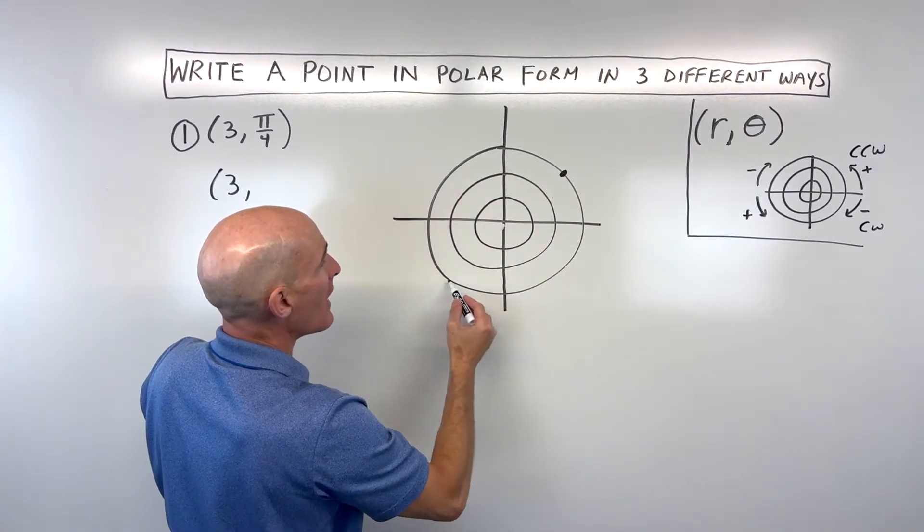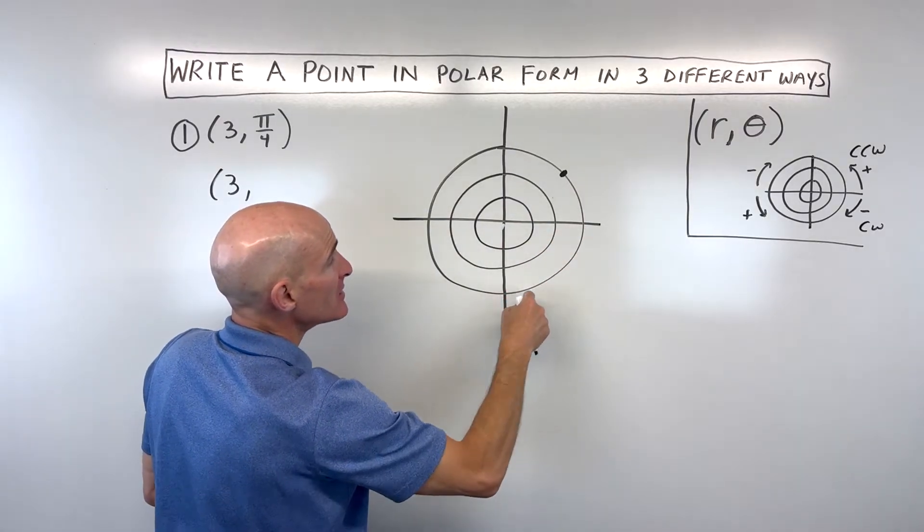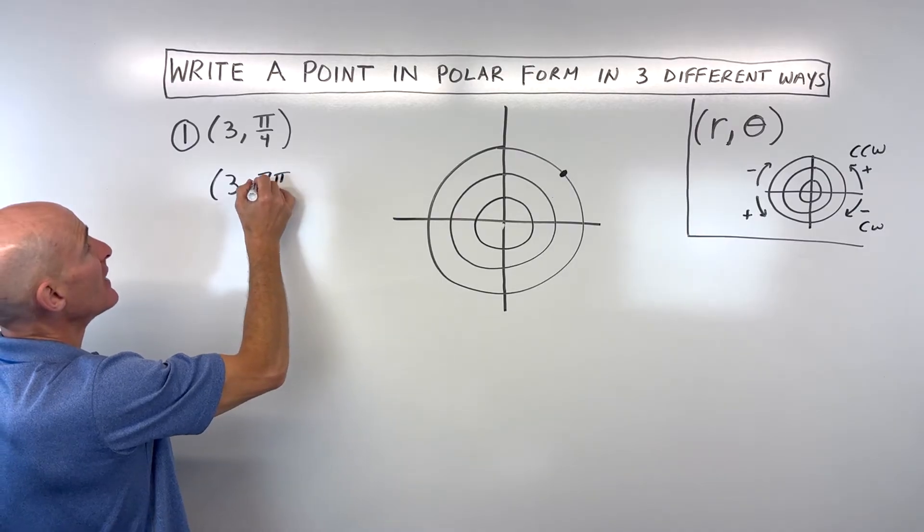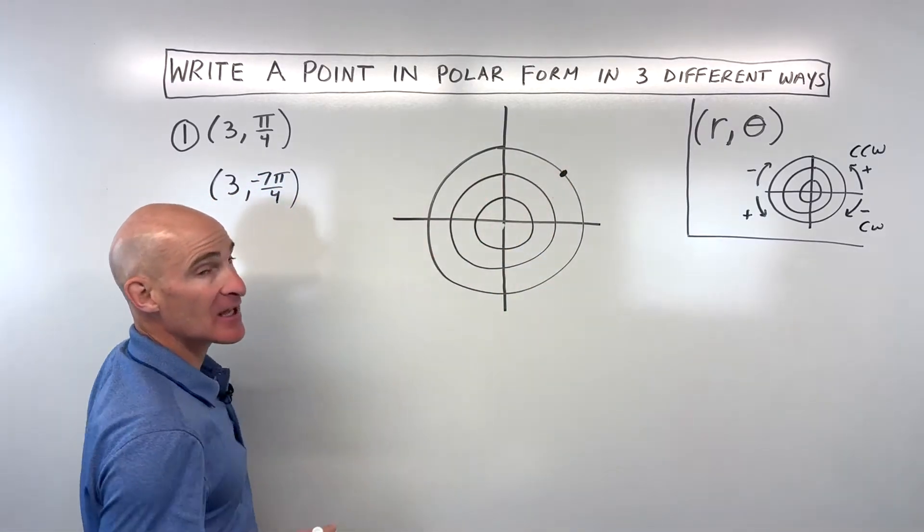Because I'm going clockwise, that's actually seven pi over four. So this is negative seven pi over four, since I'm going clockwise it's a negative angle.